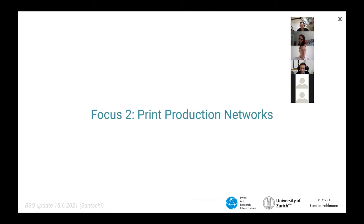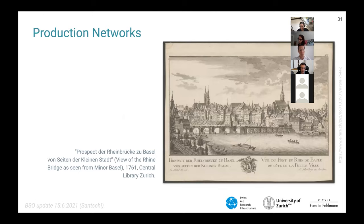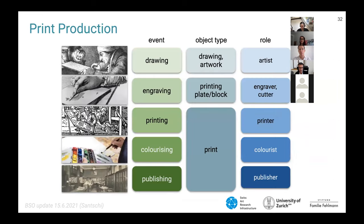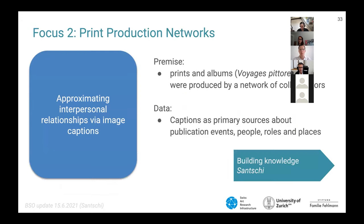Let's go to our second focal point of research: the social networks around print production. The objects in our image and data collection are works of minor masters, which means that not a lot of primary or secondary literature is available on the individual objects and their moment of creation. Print productions are complex processes with many steps and participants, as well as an image that undergoes a transformation of medium from sketch to printed block to completed print. We are interested in who was engaged in the production of works, including individual prints and album publications — namely the Voyage pittoresque. Our primary source for understanding this production network are the captions printed alongside the images — primary information directly with the image.